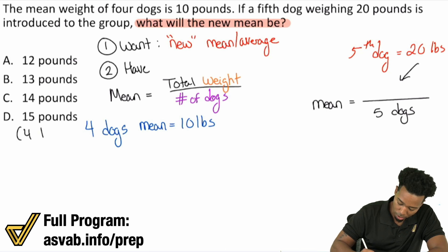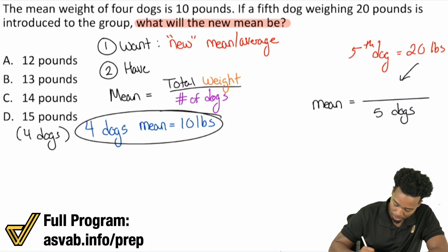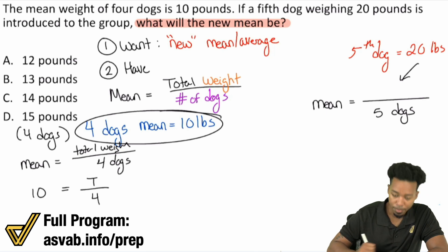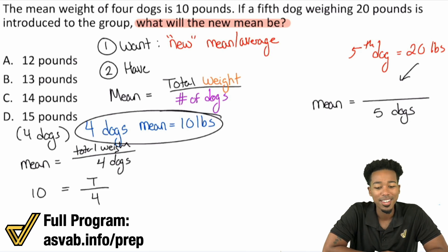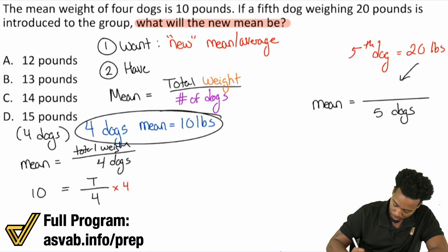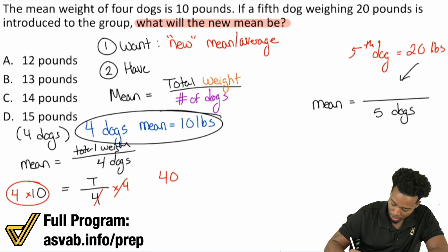For the four dogs, let's work with their mean. The mean of the four dogs is 10 pounds. So 10 pounds equals the total weight divided by four dogs. I'll mark this as T — the total for four dogs divided by four equals 10 pounds. That's a true statement. So what we do is multiply both sides by four. We cancel out the four on the right side, giving us four times 10, and that's 40 pounds. 40 pounds is the total weight of the four dogs.